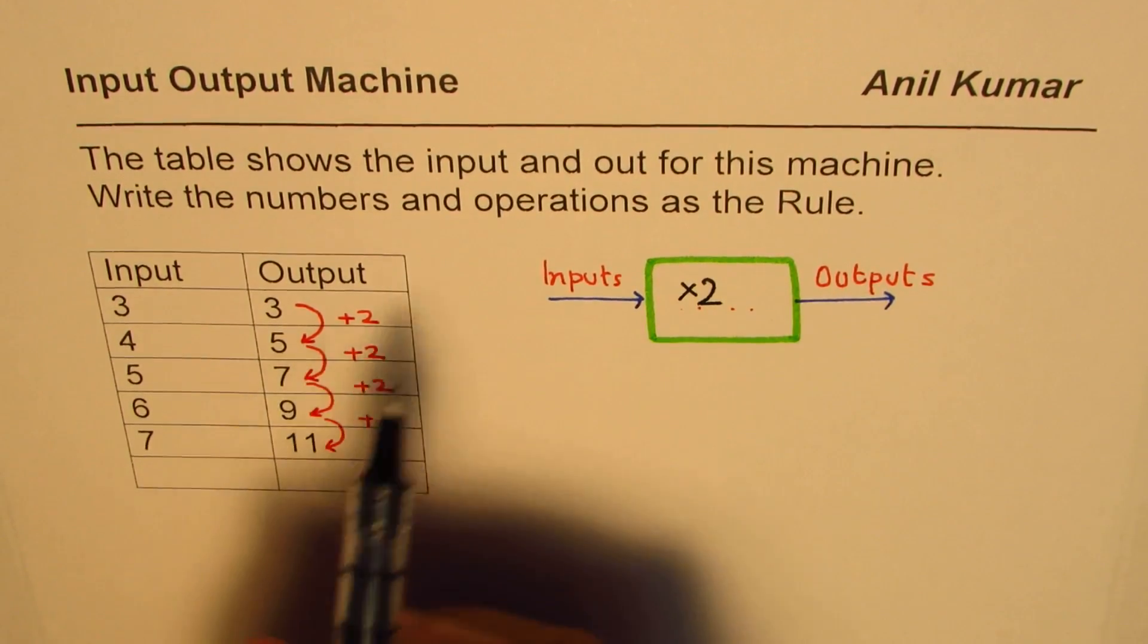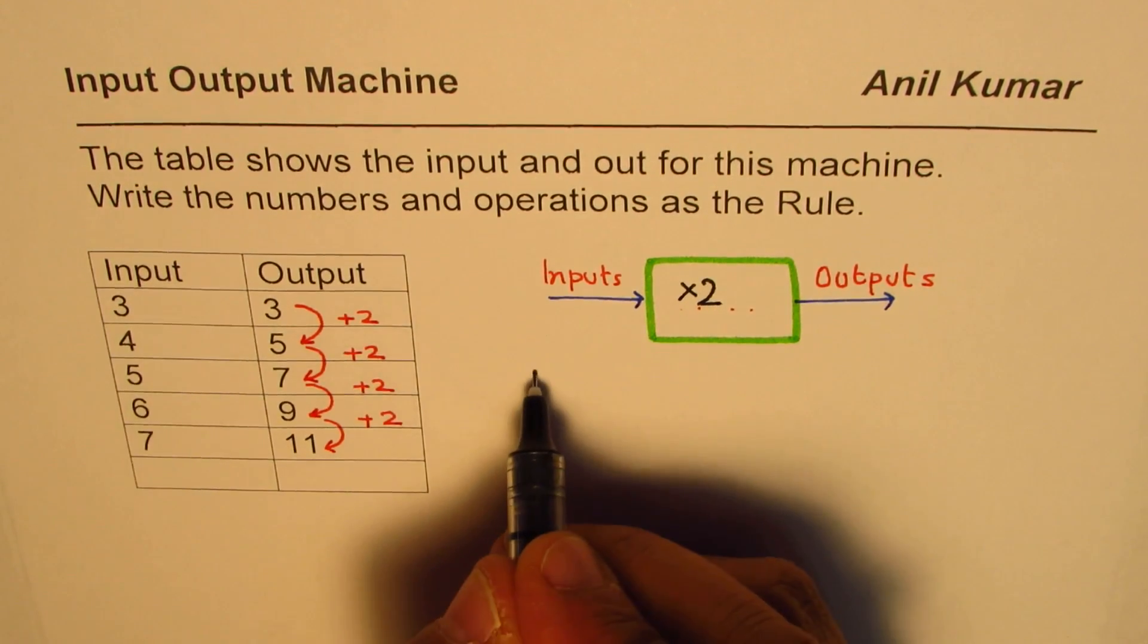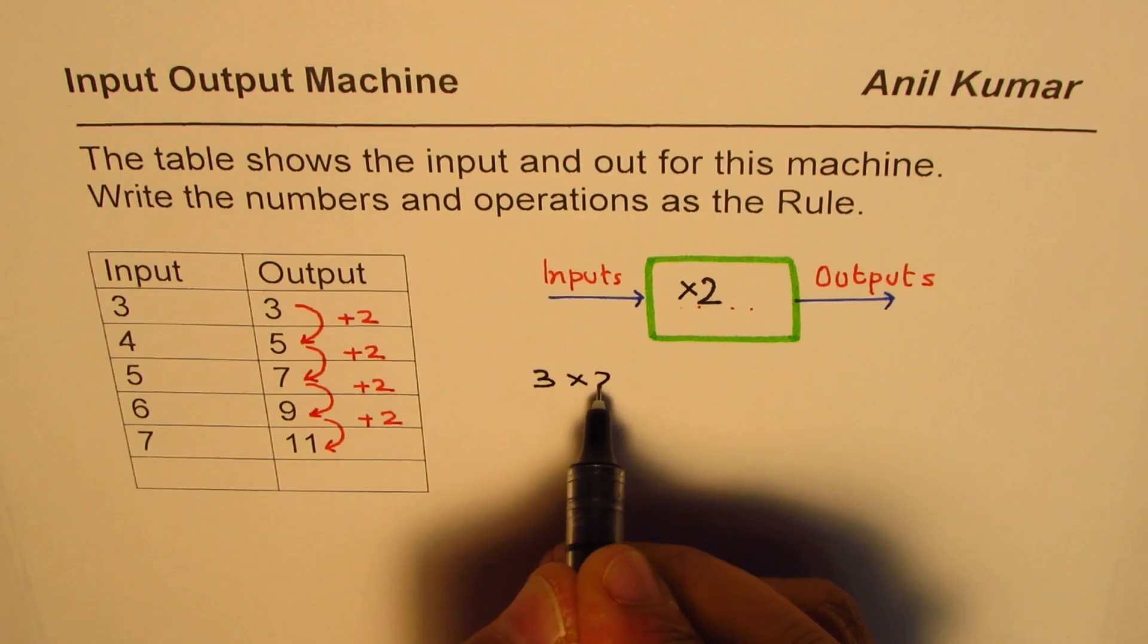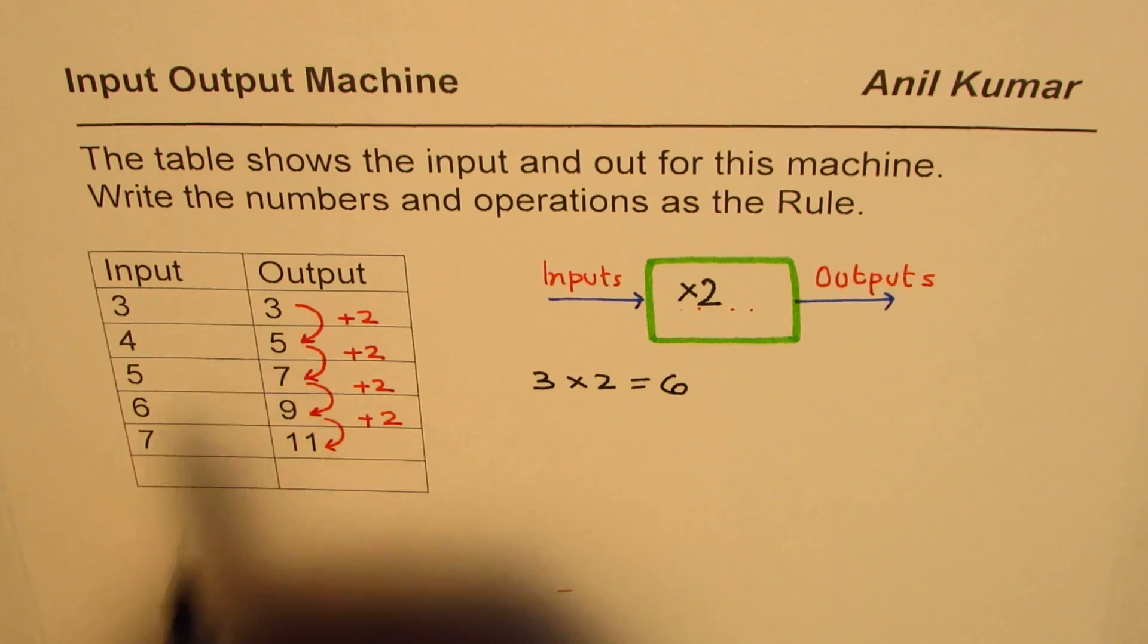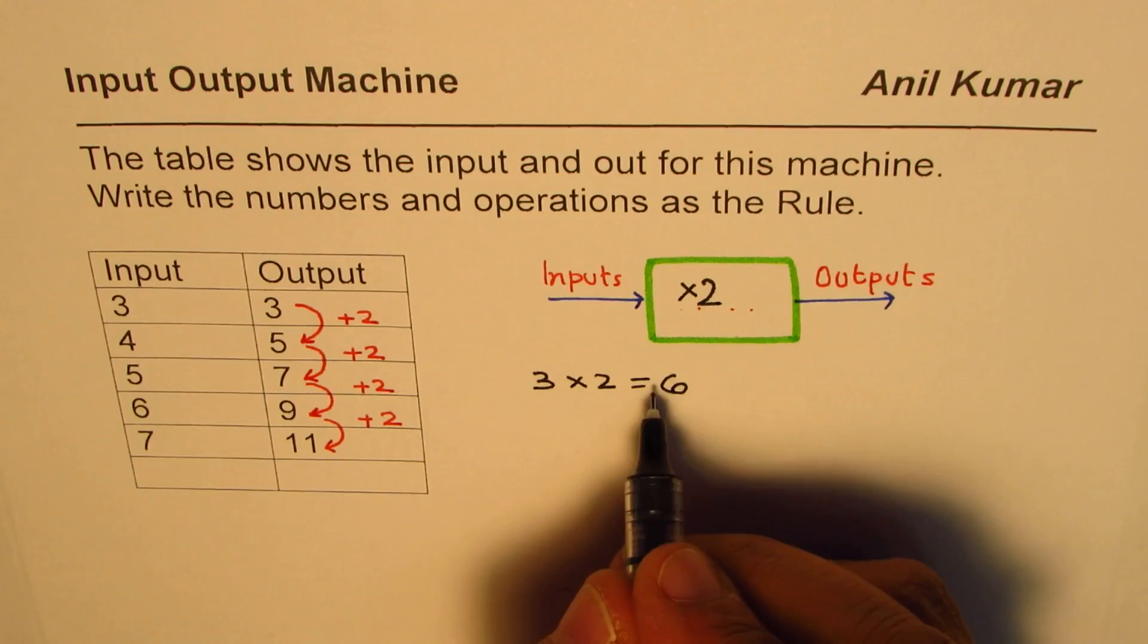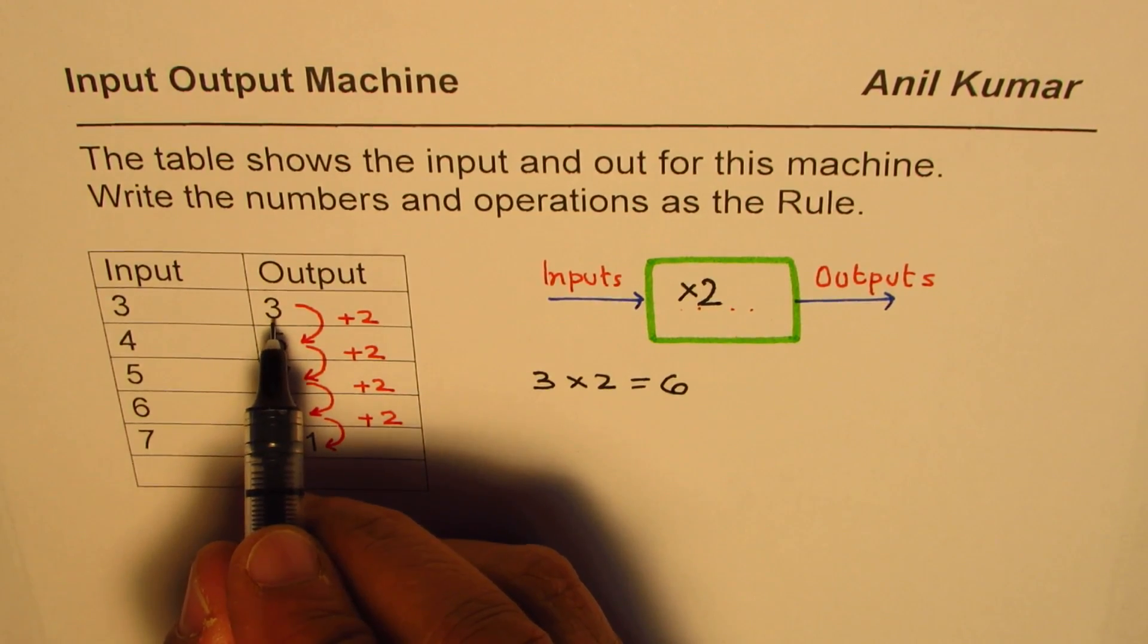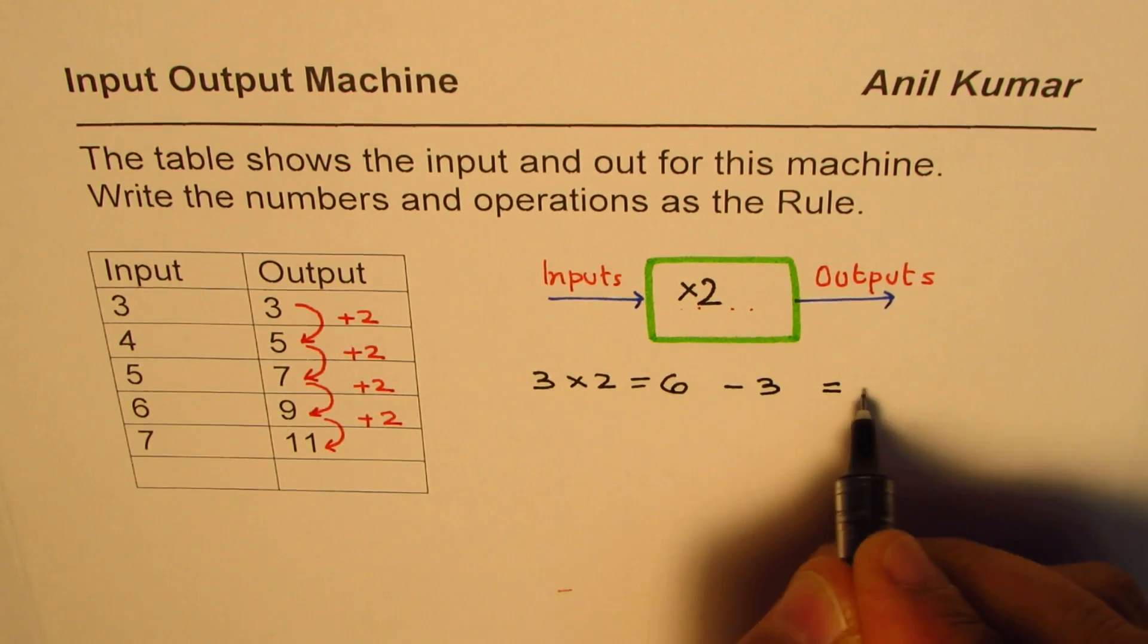Well, if I do 3 times 2 what do I get? Let me try. So we do 3 times 2, we get 6. We want 3 not 6, so what should we do now? We have to take away something to get 3. The number seems to be 3, so if I take away 3 what I get is 3.